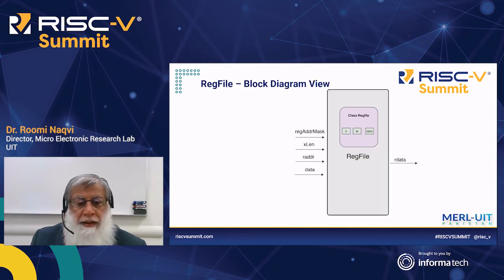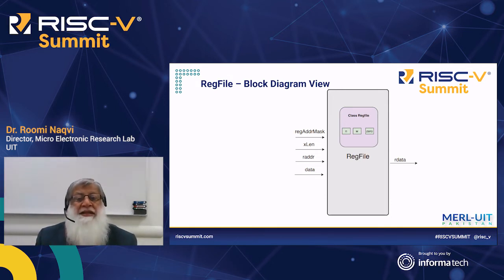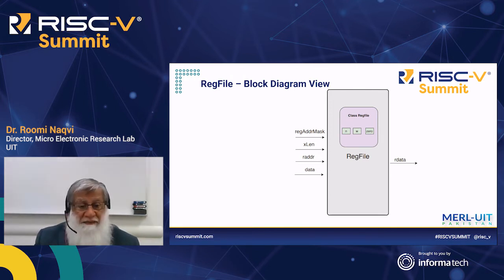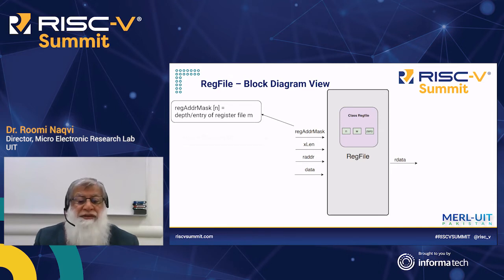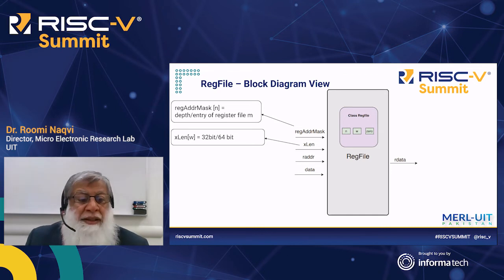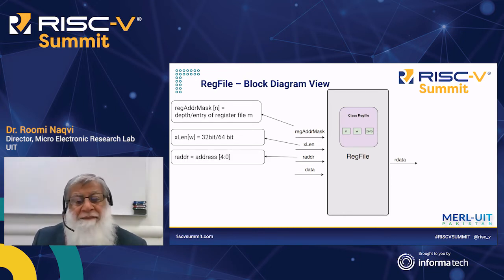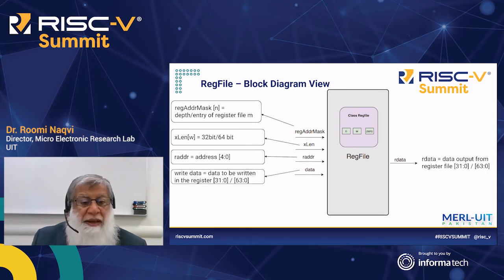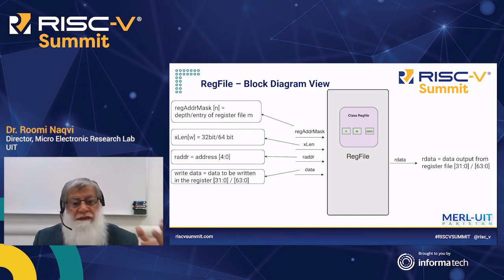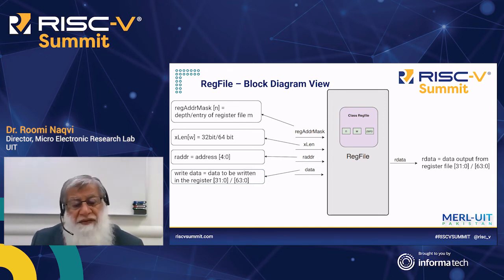Once we had the flow diagram of the register file class, we created a hardware block diagram view — common in microarchitecture specifications — showing inputs and outputs. The register file word bits are either 32 or 64 bits controlled by XLEN, with a 5-bit address supporting 32 registers, a 32- or 64-bit data bus in, and a read data bus out. This transposition from software class to hardware block diagram helps us understand both architectures.